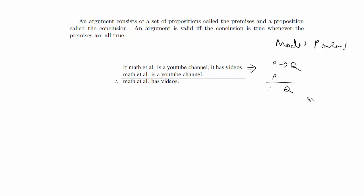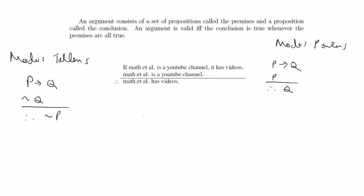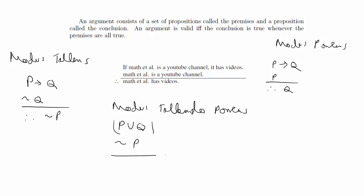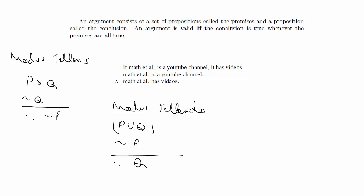The first law of inference is modus ponens. The second is modus tollens, a manner of denying: given p implies q and not q, you can conclude not p. The third law is modus tollendo ponens, sometimes called disjunctive syllogism. If p or q is true and not p is true, then you know q must be true, because one of the disjuncts must hold. Using these three laws in different ways, you can prove that many arguments are valid.